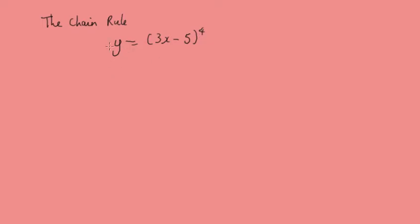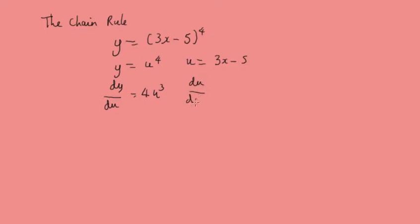To differentiate that, we would make this y equals u to the power 4, where u is 3x minus 5. Now we differentiate: dy by du equals 4u to the power 3, and du by dx is going to be just 3.